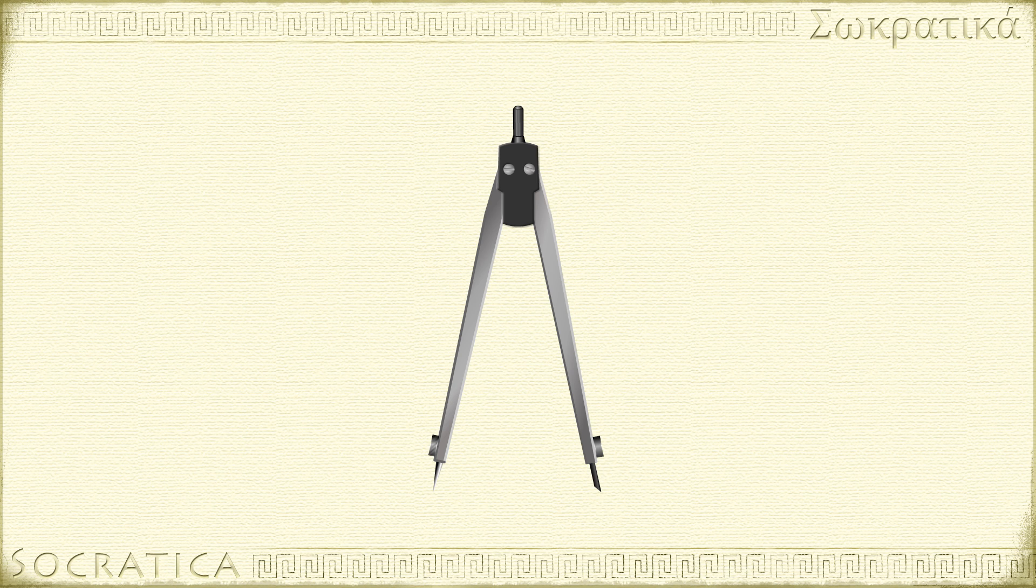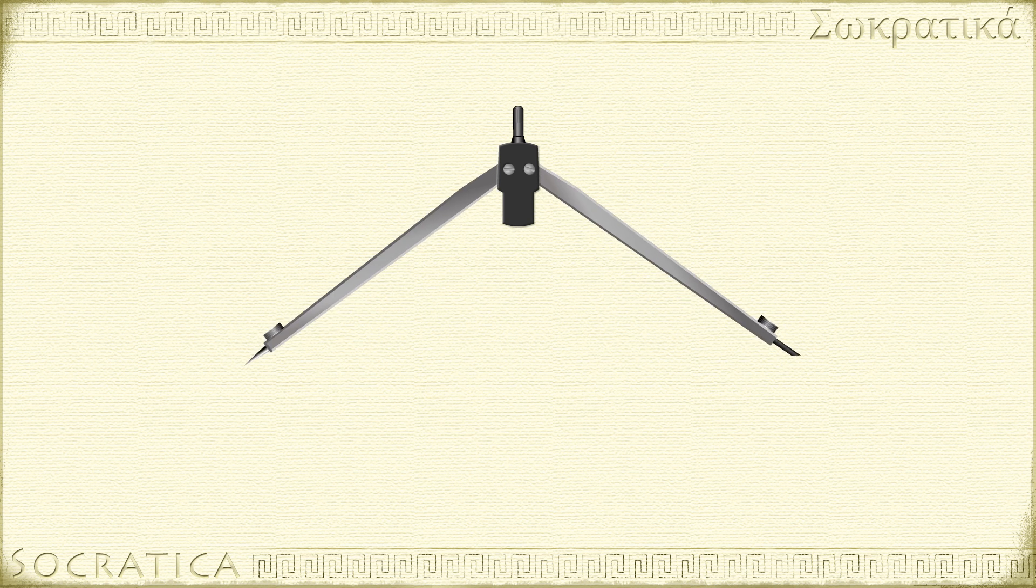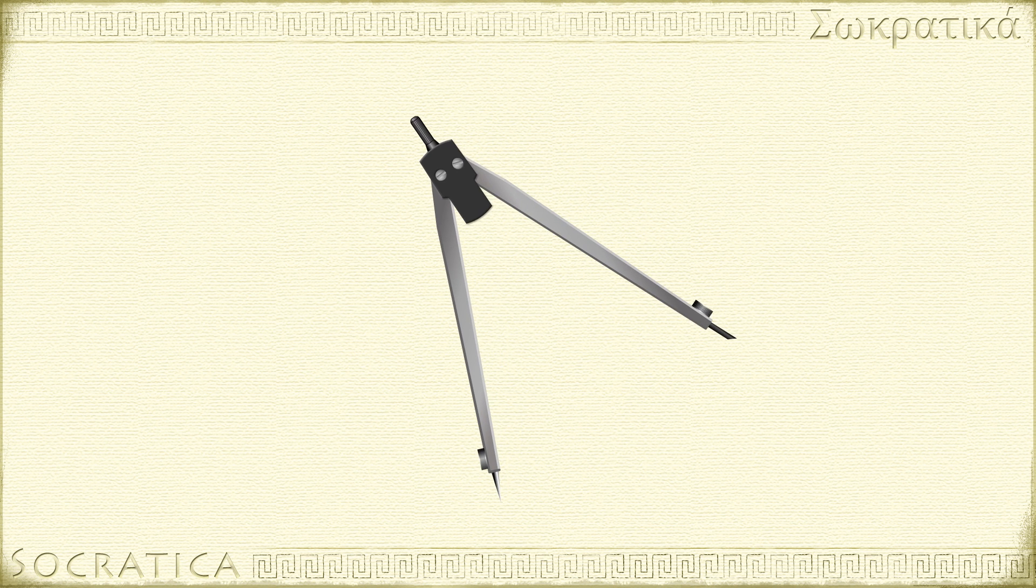This is a different kind of compass than the one you use to find north. A geometric compass is shaped like a V, which can be opened or closed, and one end has pencil lead for drawing.